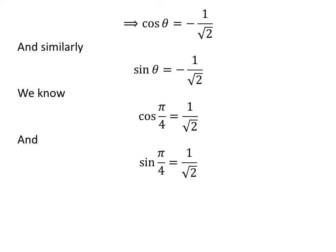As value of cosine of theta is negative and value of sine of theta is negative, theta lies in third quadrant. We know cosine of pi upon 4 is 1 upon square root of 2, and sine of pi upon 4 is 1 upon square root of 2.